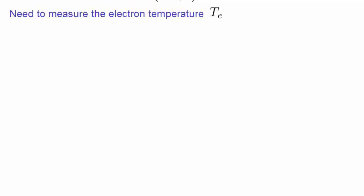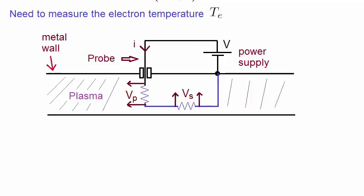To measure the electron temperature, let's recall the diagram that we've shown previously. You'll notice there is an extra component of two resistors in the plasma, with voltages Vp and Vs across them. There are actually no resistors in the plasma, but the plasma does behave like a resistance. We've included these to show that the plasma forms a circuit with the outside power supply and the probe.